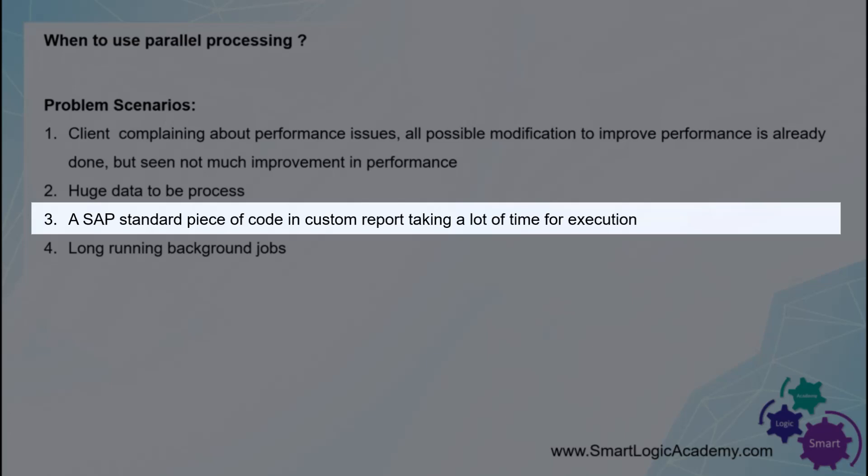Scenario 3: You have developed a custom ABAP report which uses SAP standard code — it could be an SAP standard function module or method to perform some business operations. You executed the report and found the performance is poor. After analysis, you identified that the SAP standard function module or method is taking more time, and hence the overall performance is poor. You can optimize your custom Z code, but how can you optimize the SAP standard piece of code since you cannot modify it?